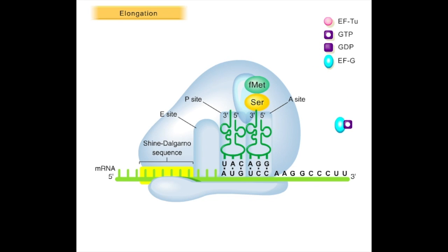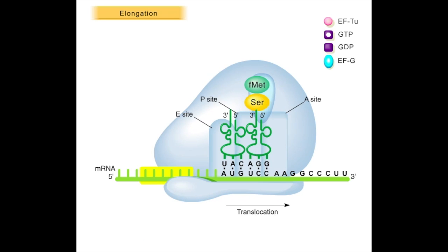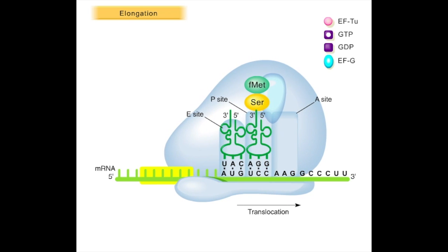An EFG-GTP complex binds to the ribosome, hydrolysis of GTP occurs, and translocation begins. The uncharged tRNA moves from the P site into the E site, blocking the next aminoacyl tRNA from attaching to the A site until translocation is complete.